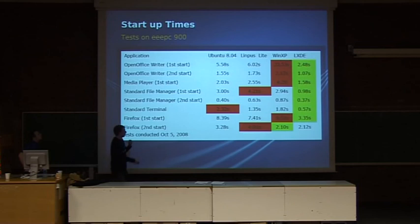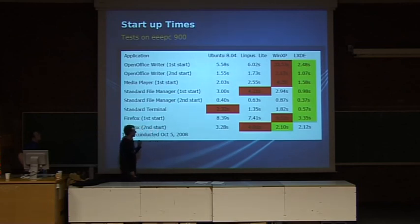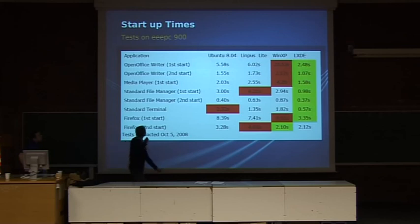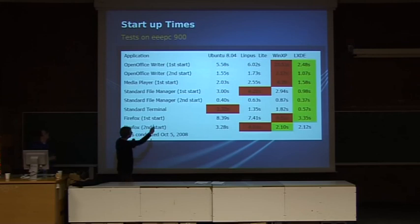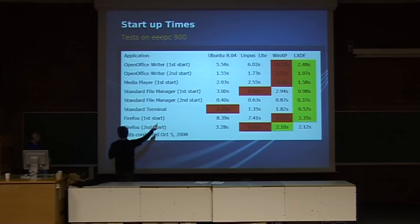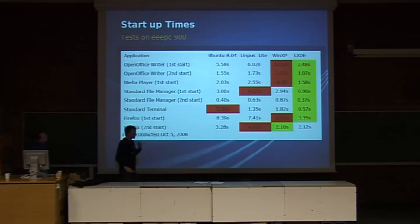We are much faster, we use less resources, and it's much more lightweight — that's our goal. Those are the design principles. We have here a table: OpenOffice Writer for instance, we have the standard GNOME, Ubuntu 8.04, we have LinPos Lite which is based on old Fedora, and we have Windows XP. Windows XP is the leader in slowness. And LXDE overall is a much less resource-hungry system.